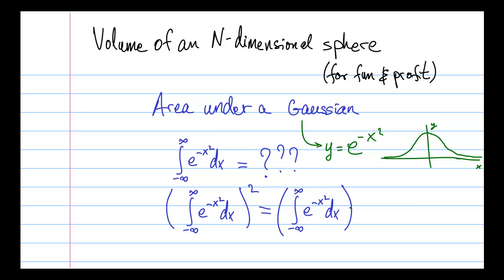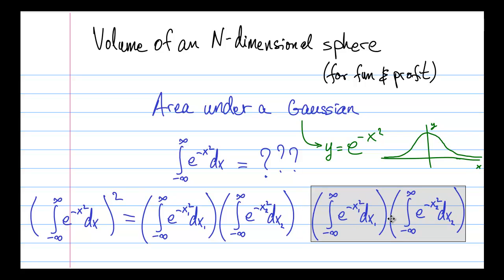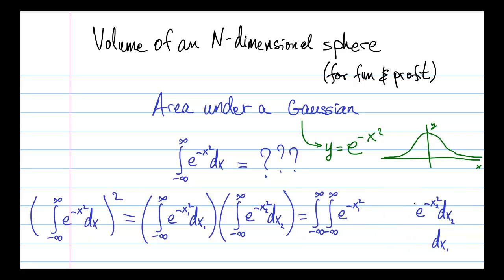So how does that work? Well, we take the square of the integral, which means we take this integral expression and multiply it by itself. And then what we can do is we can simply rewrite this expression by moving all the integral signs to the left and all the dx's to the right.